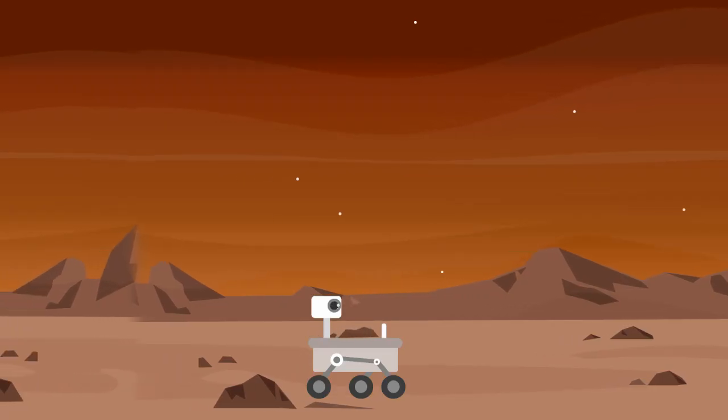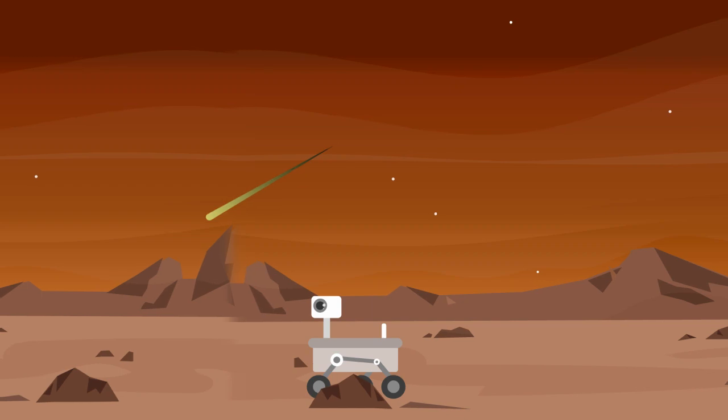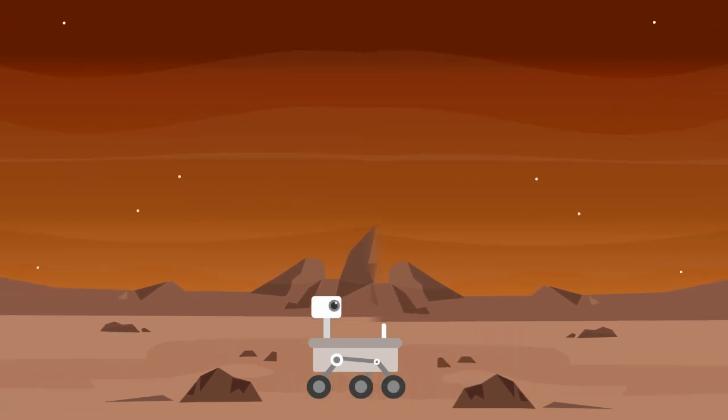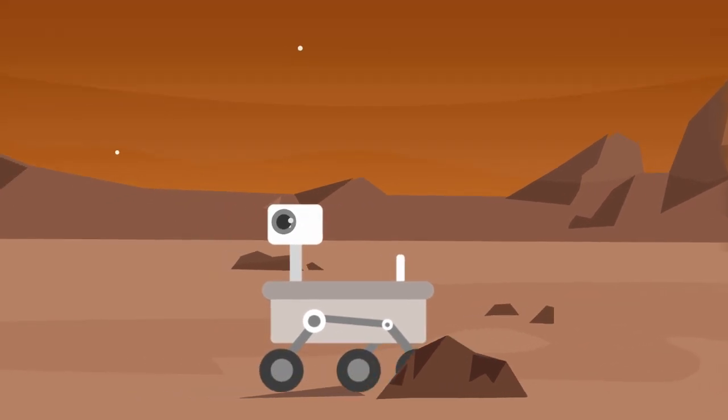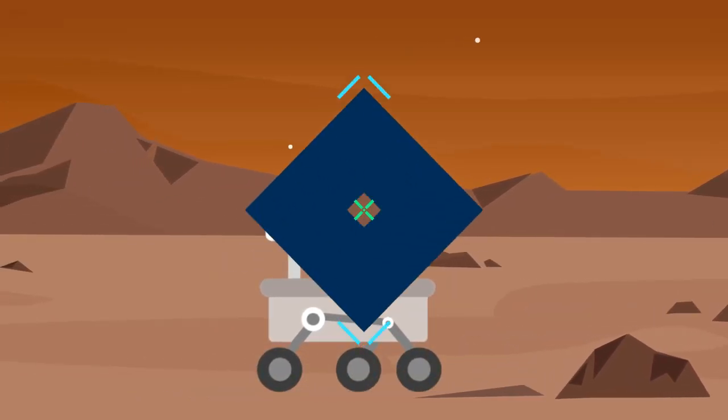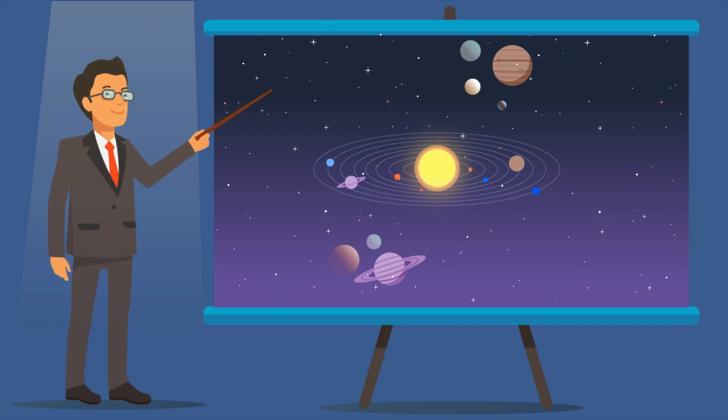The Mars Curiosity rover looked for water on the red planet's surface and did find traces of ancient evaporated lakes. But most scientists believe there is very little chance that Mars still supports life today.